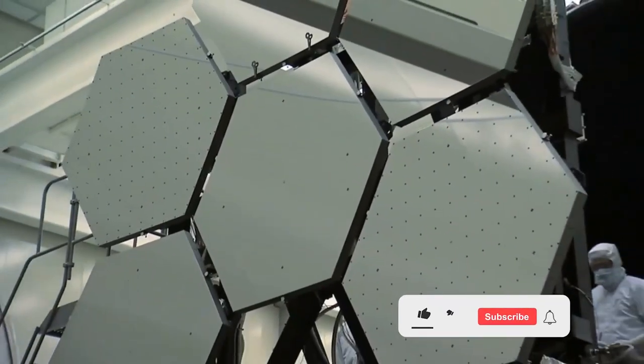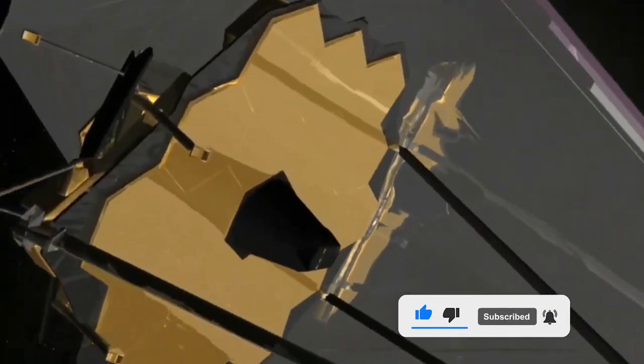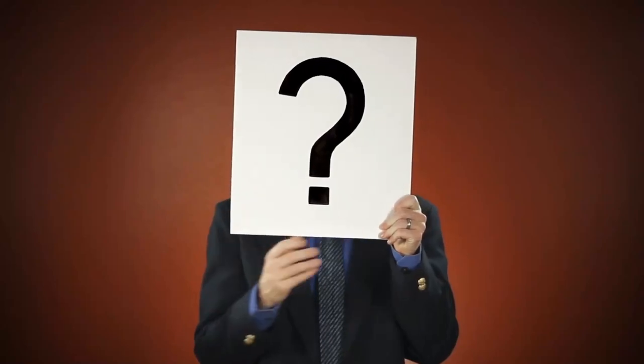If you like this video, please check out this one, which talks about the JWST and its detection of carbon dioxide on WASP-39b. Do you think humans can survive on the surface of Ross 508b? Please share your thoughts in the comments section below.